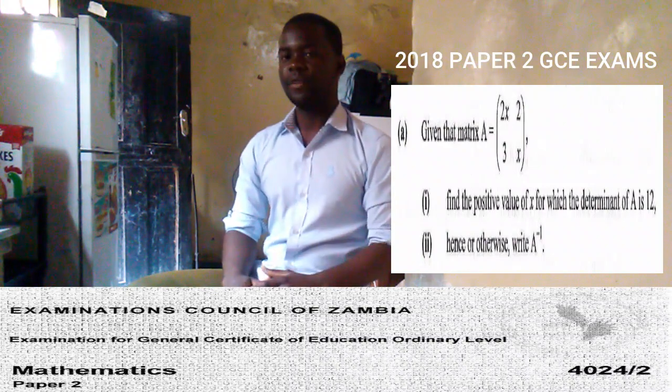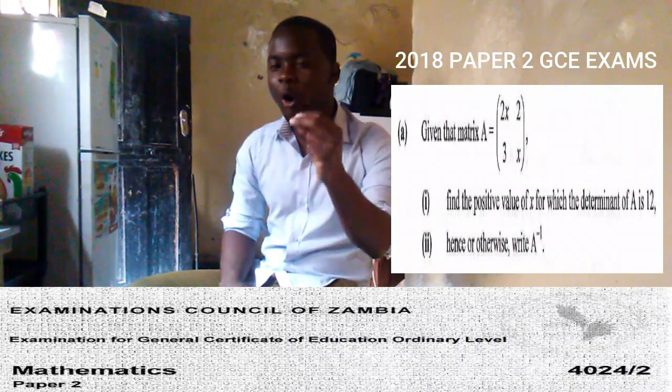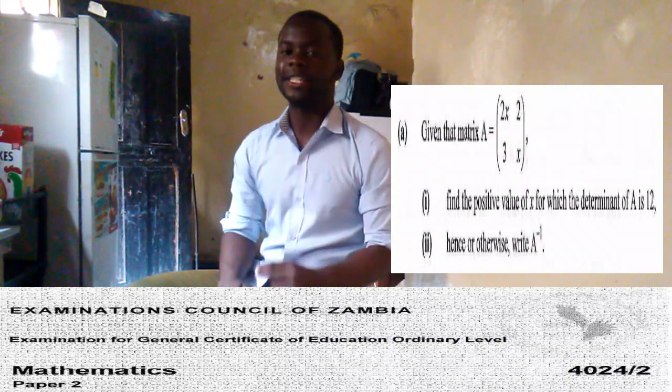Thereafter, the next question which they always ask is: hence or otherwise, determine the inverse. Very simple concept. When you calculate the inverse, that's always two marks. So from the concept of matrices in mathematics paper 2, you'll get four marks.